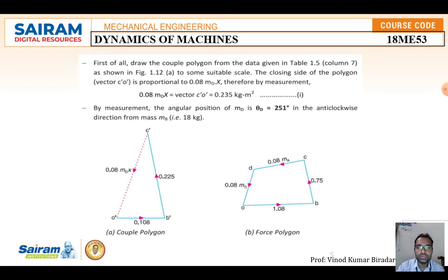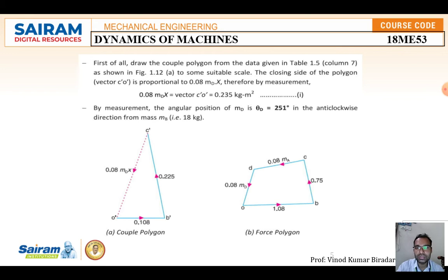From C-dash, join back to O-dash (the closing vector). That length equals 0.08 × M_D × X. By measuring the vector C to O-dash, you get 0.235. Also by measuring the angle theta D, you get theta D = 251 degrees.